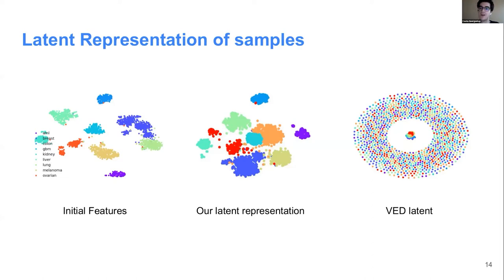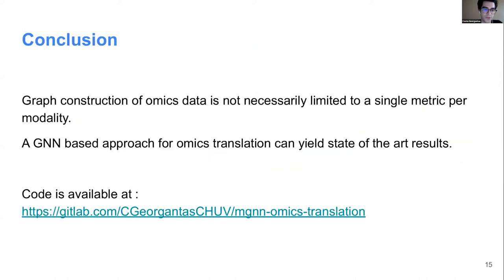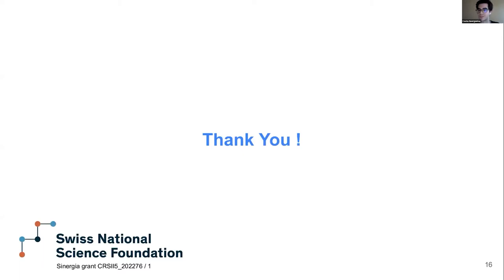To understand why our method outperforms the MLP baseline, we plot the latent representations using t-SNE. When using only fully connected layers, the latent space collapses. With our multiplex graph, we preserve locality — similar nodes maintain similar latent representations. In conclusion, we showed that the graph construction step for omics can have more than one similarity per omic, and graph-based neural networks can achieve better results for this type of problem. Code is available.